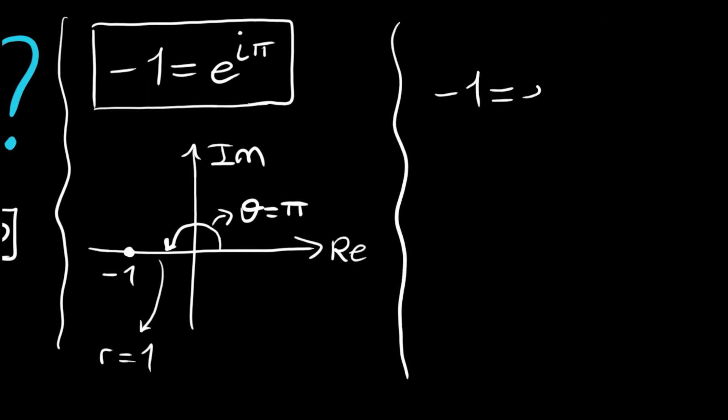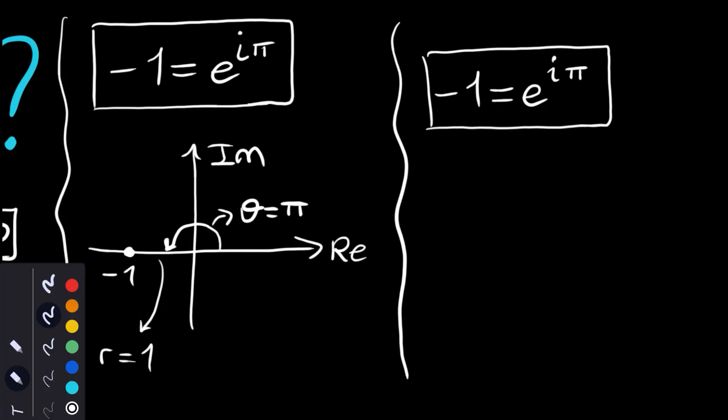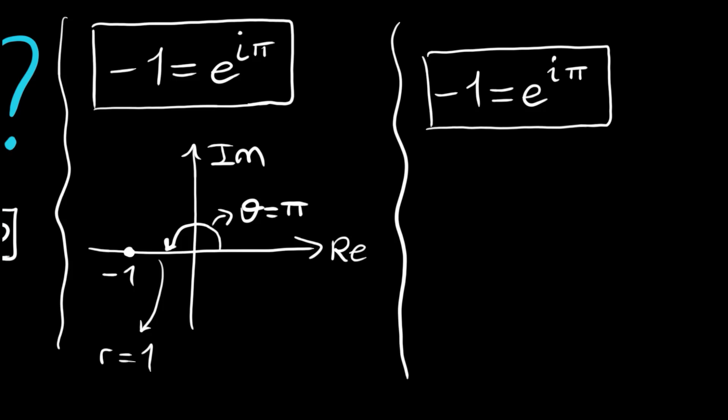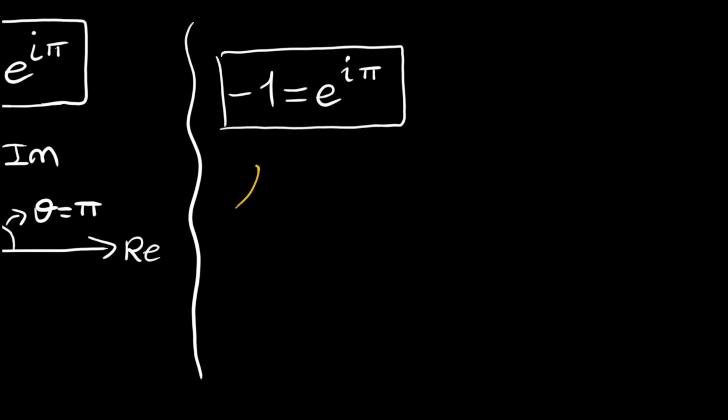is equal to e to the power of i pi, principally as I said before. So taking natural log of both sides, we will have ln negative 1 is equal to ln e to the power of i pi.